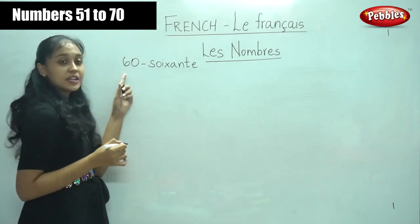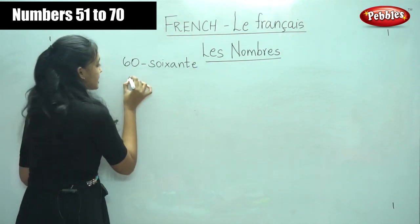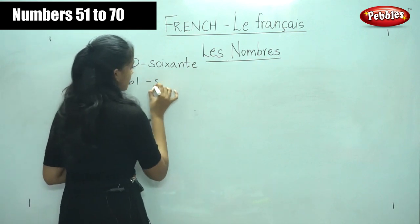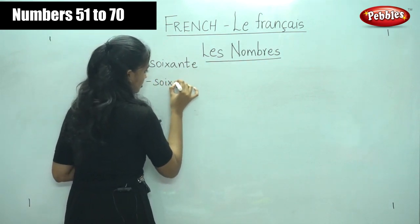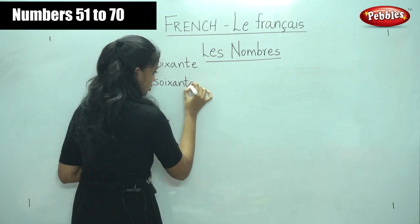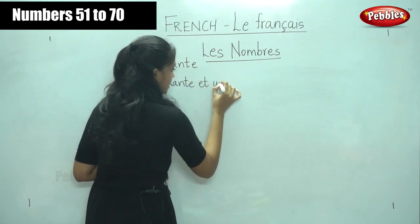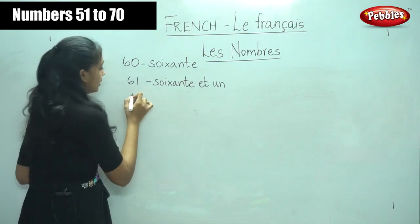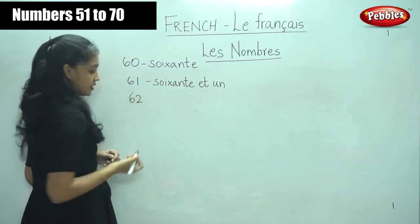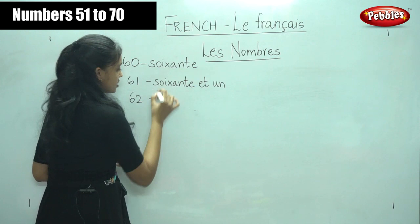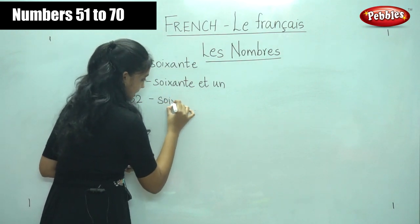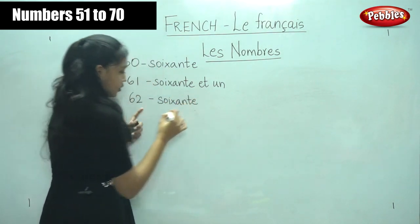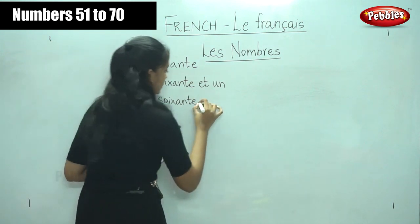Can you guess what we would write for sixty-one? For sixty-one, it is soixante et un — sixty and one, sixty-one. For sixty-two, it is similar to that — soixante deux — sixty and deux.